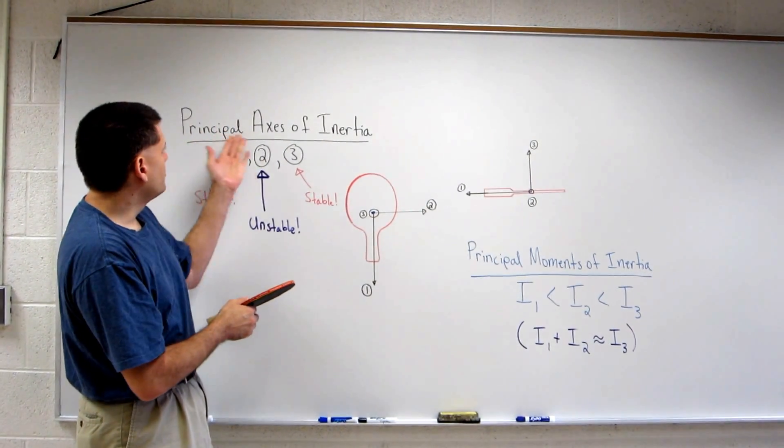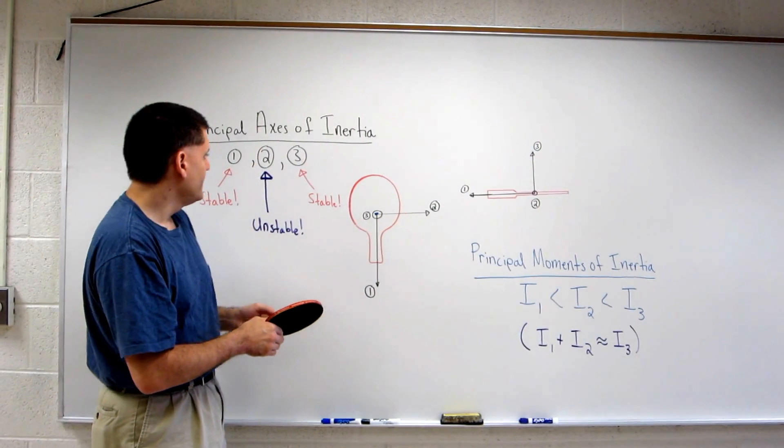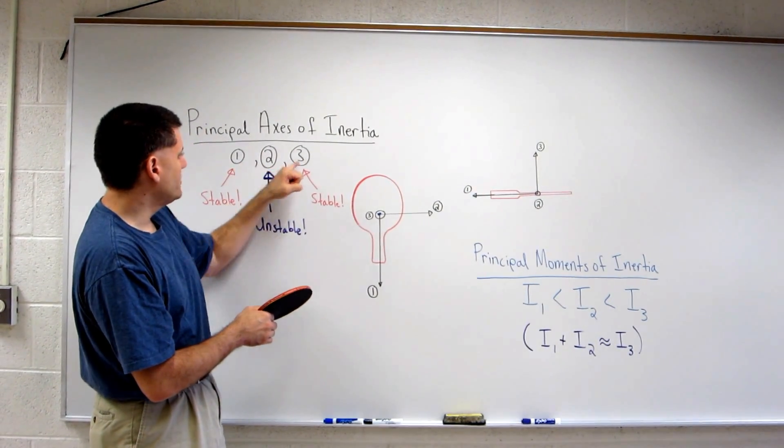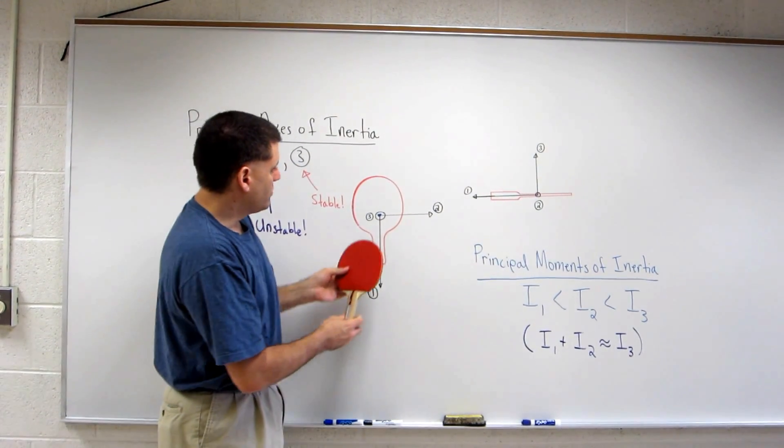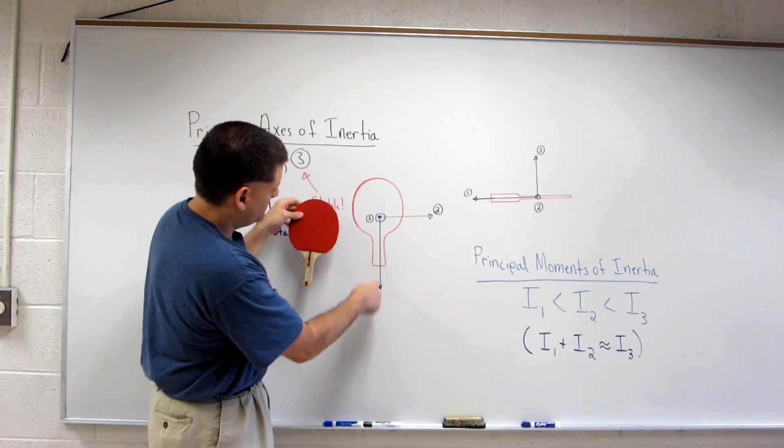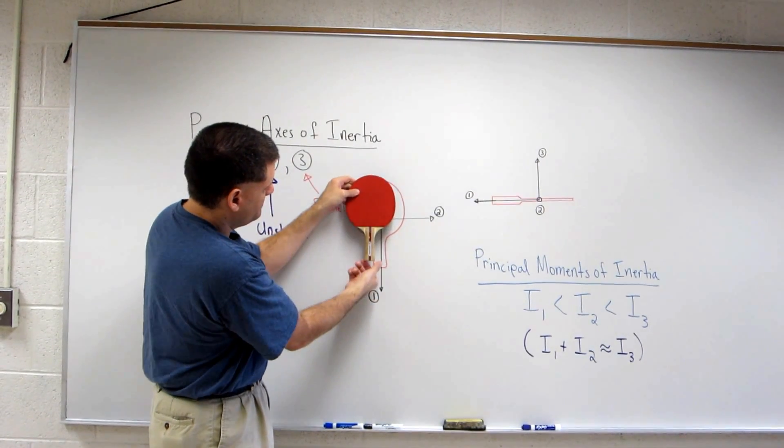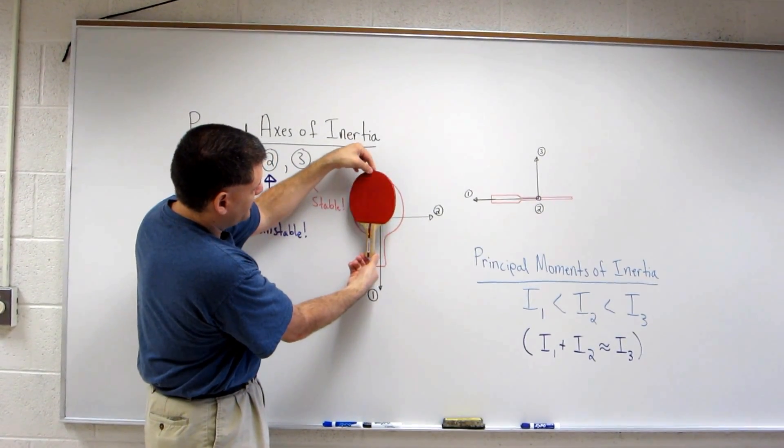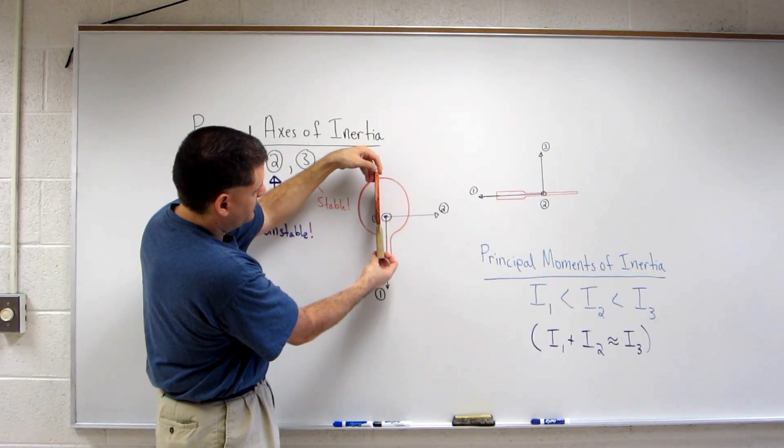We call these the principal axes of inertia. And I've simply labeled them one, two, and three. So what I mean is the one axis points along the paddle here. So any rotation about the one axis would be along this direction.